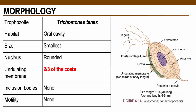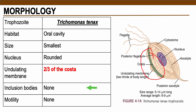The next one is Trichomonas tenax — the mouth Trichomonas, which inhabits the oral cavity of the infected host. The size is the smallest among all Trichomonas species and the nucleus is rounded. In terms of the undulating membrane, this is two-thirds of the costa length — almost as long as the costa. There are no inclusion bodies present and the motility is not documented.